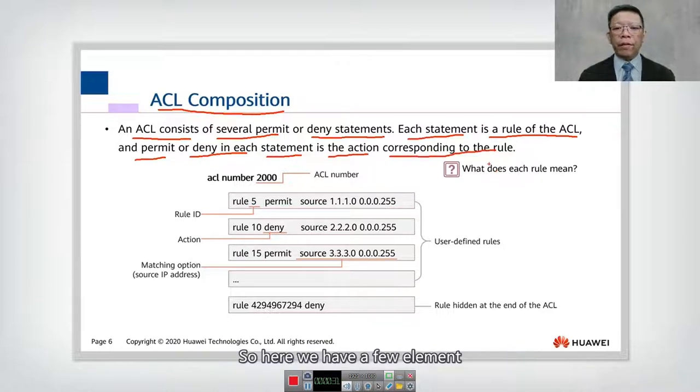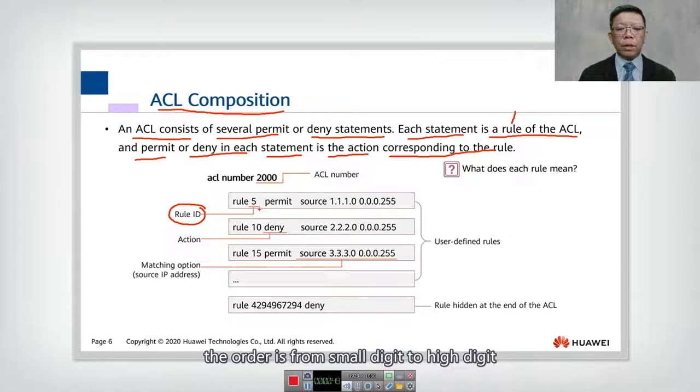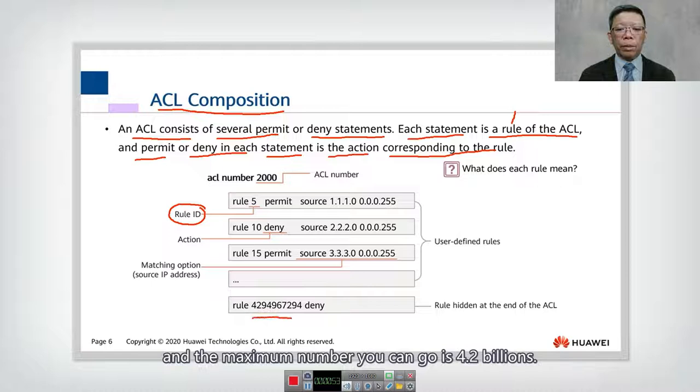So here, we have a few elements. First is that we have the rules. The rules is the rules ID. This is the first component that you have to be aware. As I mentioned on the earlier slide, rules are in order. The order is from small digit to high digit, and the maximum number you can go is 4.2 billion. So first component I want to remember is rules are in order, from low order to high order.